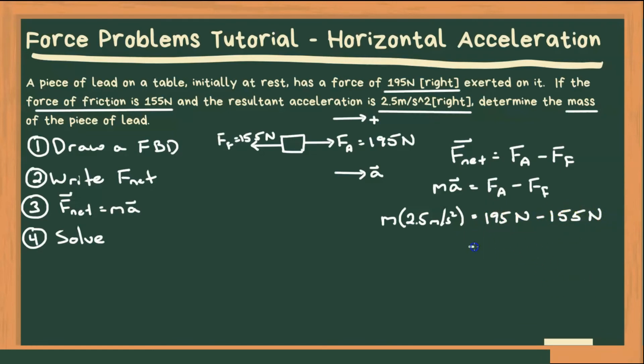195 minus 155 is 40 newtons. And that equals mass times 2.5 meters per second squared. Divide both sides by 2.5, and we solve for mass, which is 40 newtons, divided by 2.5 meters per second squared, which gives us a mass of 16 kilograms.